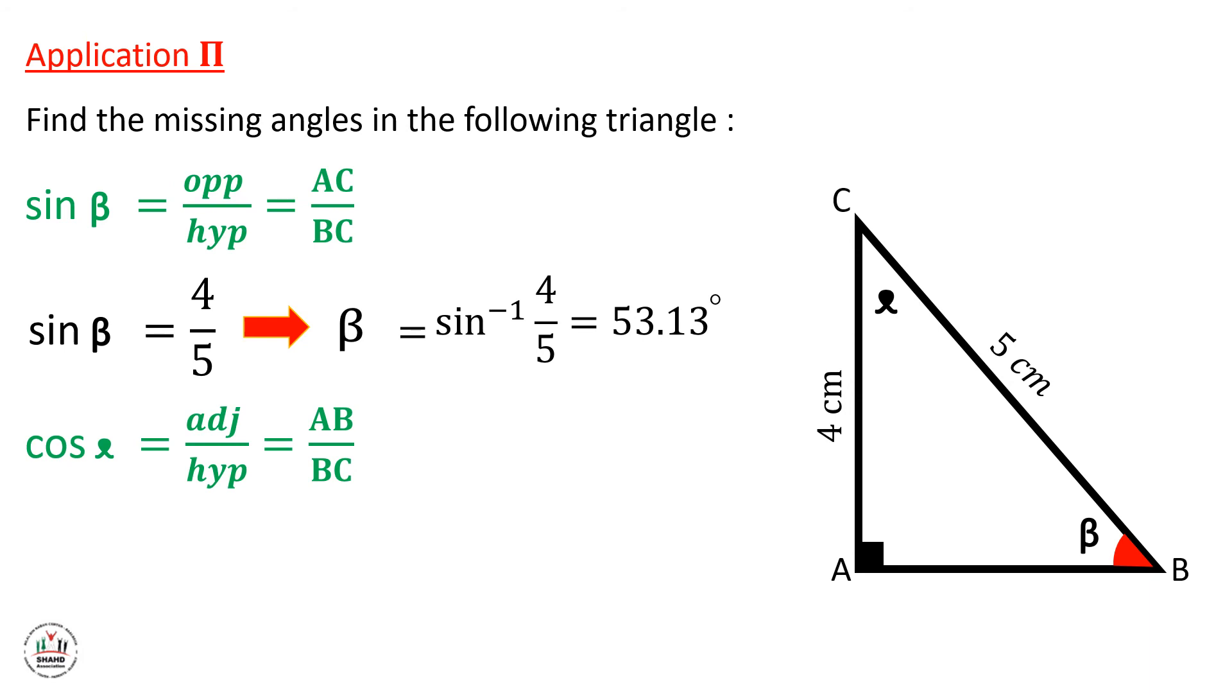Now we will do the same for angle alpha. So we write cosine alpha equals adjacent over hypotenuse, which is equal to AB over BC. So cosine alpha will be equal to 4 over 5. Again we press shift cosine to get this formula. So we press shift cosine on the calculator, 4 over 5, and we press equal, and the answer will be 36.87 degrees. You can read it as 87 after the decimal point; you should read digit by digit. So 36.87 degrees.